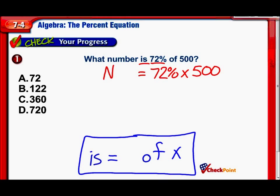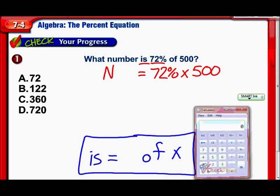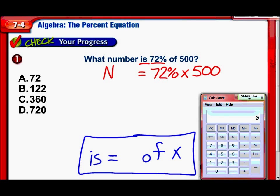So I'm left with n equals 72% times 500. Really all I have to do on this particular problem is multiply 72% times 500. We have 72%, so that's 0.72 times 500. And that gets us 360. Yes, there it is. So it turns out that 360 is 72% of 500.